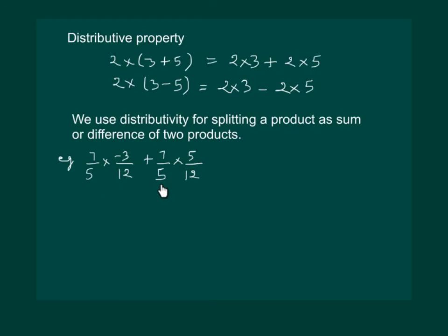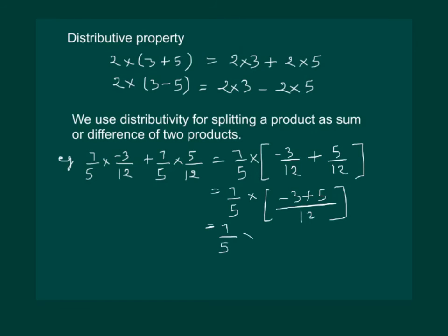Consider this example. In this example we can see that the question is already split up. So we can use the reverse of distributivity. That means we can take out 7 by 5 common. Then minus 3 by 12 plus 5 by 12 remain in the bracket. And it becomes easier to solve it. On solving we can get 7 by 30 as the required answer. So our distributive property can be used both ways.